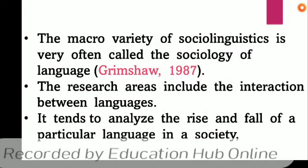The macro variety of sociolinguistics is very often called the sociology of language. Gramsha in 1987 stated that the macro variety of sociolinguistics is the sociology of language, which is related to the world. In its research areas, there is interaction between languages which brings us to the world's interactions between languages. It tends to analyze the rise and fall of a particular language in a society, and how a language becomes a foreign or developed language.